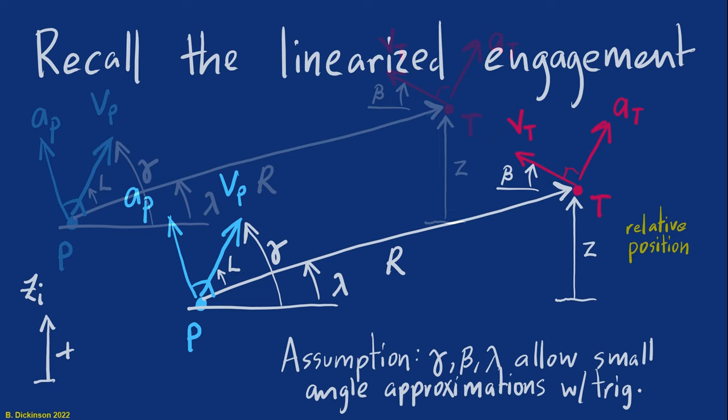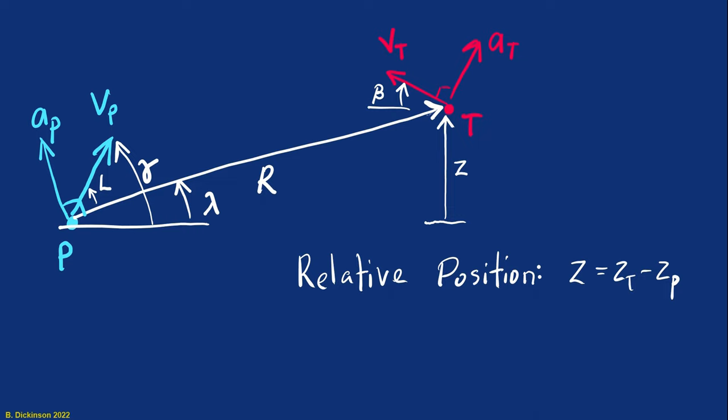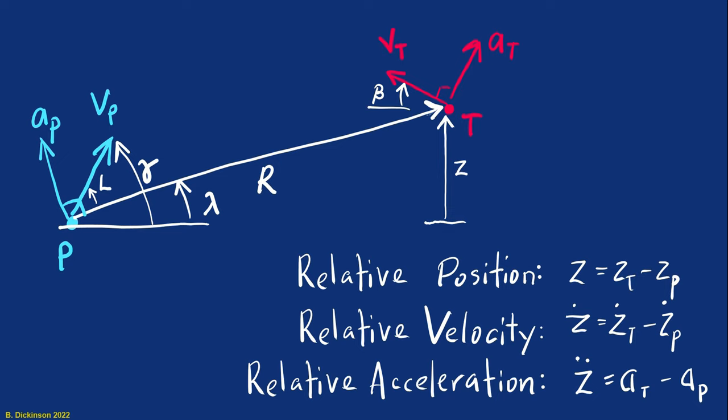Relative position, that's ZT minus ZP, position of the target minus position of the pursuer. Relative velocity, simply the time derivative of each of those terms. And then relative acceleration, acceleration of the target minus acceleration of the pursuer.